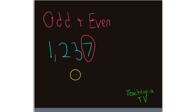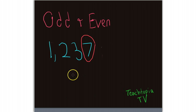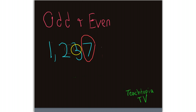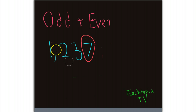We look at 7. Is 7 odd or even? It is an odd number. Does it fall into 2, 4, 6, 8 — who do we appreciate — or 0? No. 7 does not fall into that. It is an odd number. So therefore the entire number 1,237 is an odd number.